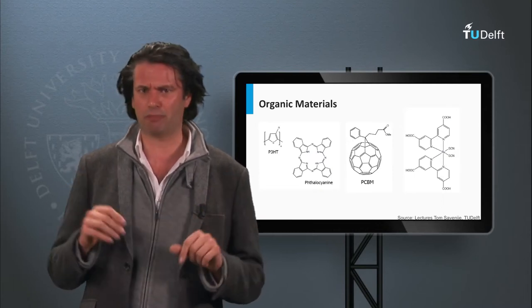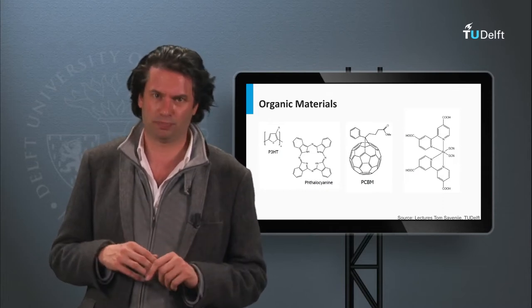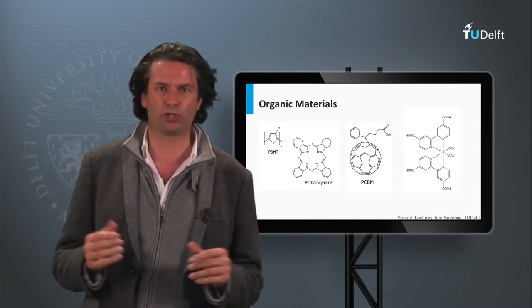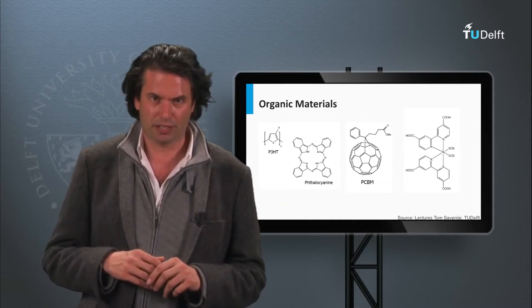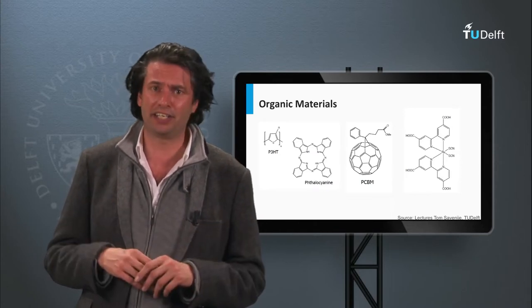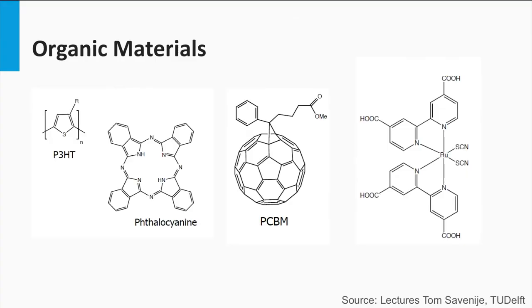All these materials can be considered as large conjugated systems. The organic polymers and molecules consist of large compounds based on carbon. The carbon may form cyclic or acyclic linear or mixed compound structures. Here we have some examples of organic materials used for PV applications, like P3HT, phthalocyanine, PCBM, and ruthenium di-N3.